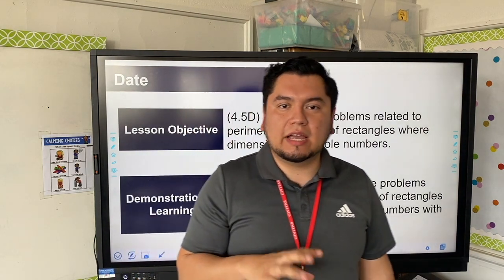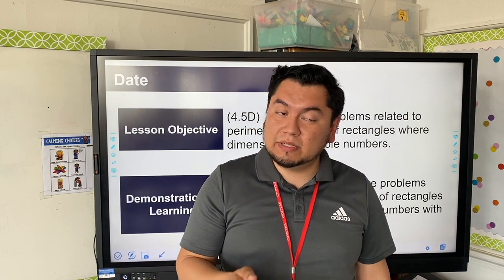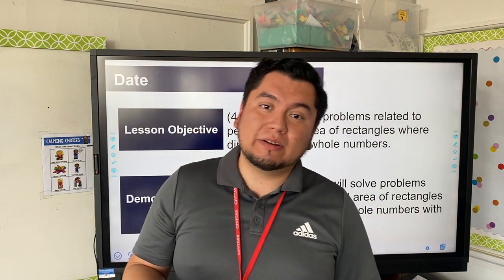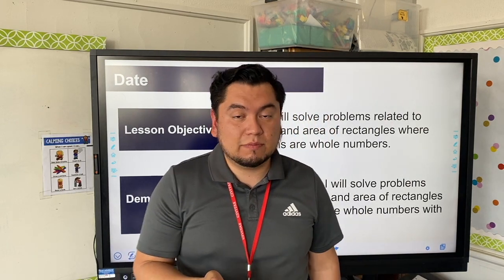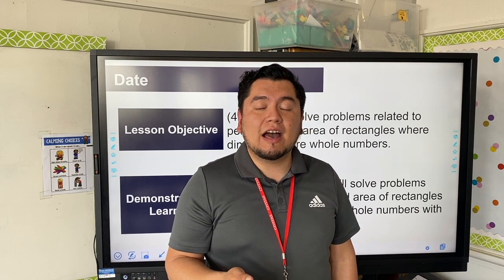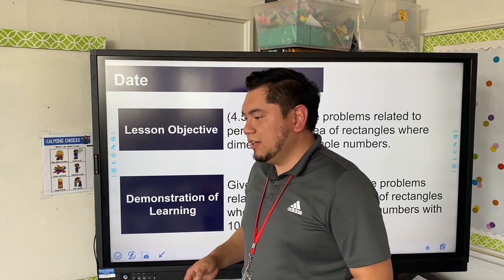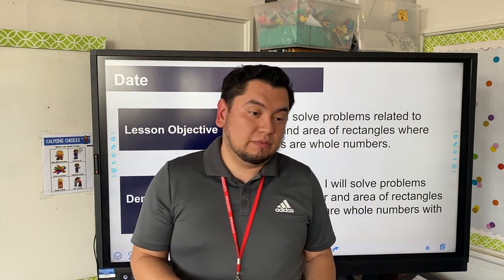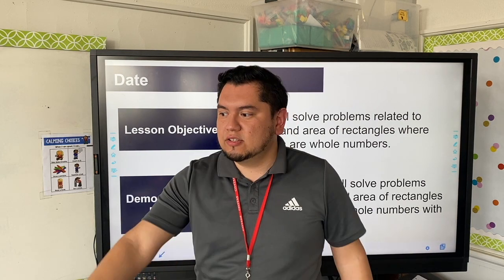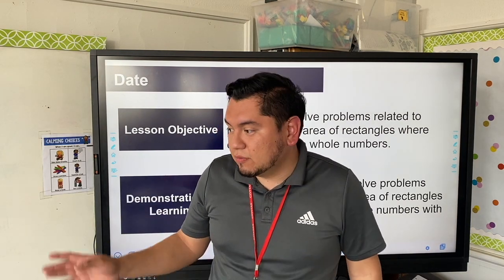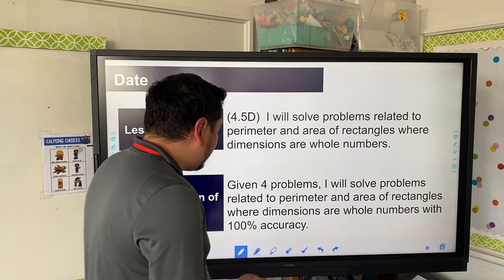Think about area and perimeter — two different things that are related. It's important that you know the distinction between the two, because later on in fifth grade you're going to be learning about volume. You need to get really good at understanding what area is, what perimeter is, and how to find each. Think about this classroom — the base of the classroom where we're standing has an area, and it also has a perimeter, which is the outline.